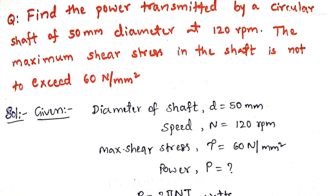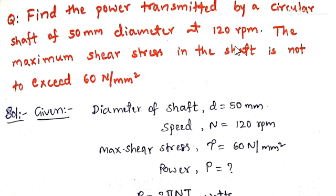Here we are going to see a problem from the topic torsion of shafts. Find the power transmitted by a circular shaft of 50 mm diameter at 120 rpm. The maximum shear stress in the shaft is not to exceed 60 newton per mm square. The given data: diameter of the shaft is 50 mm, speed N is 120 rpm, and the maximum allowable shear stress tau is 60 newton per mm square.